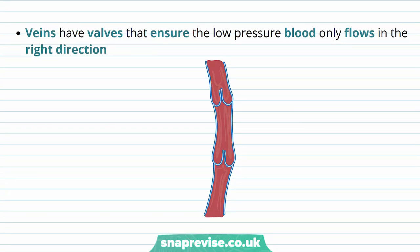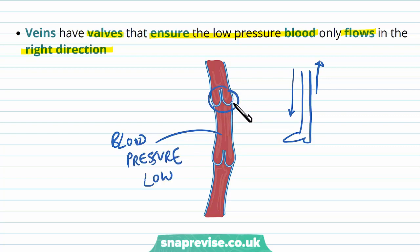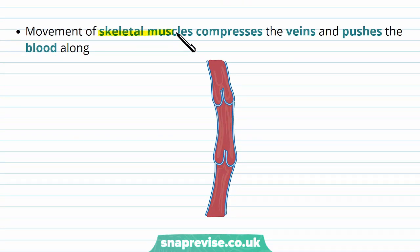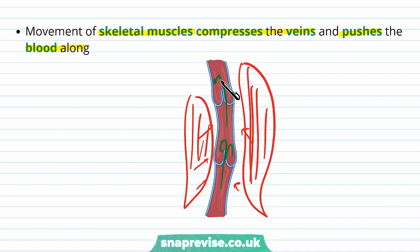Veins have a feature only found in veins: valves. These ensure that low pressure blood only flows in the right direction. Many veins are in the feet and legs where gravity wants to pull blood downwards, making it difficult to get back to the heart, especially at low pressure. The valves prevent backward flow — once blood passes through a valve it cannot go back. Additionally, veins are often surrounded by skeletal muscles, which when they contract compress the veins in a massaging motion, pushing blood along back to the heart through the valves, ensuring one-directional flow.